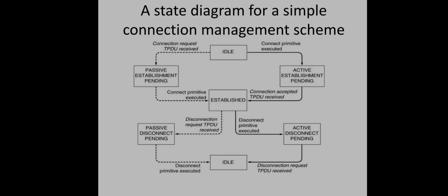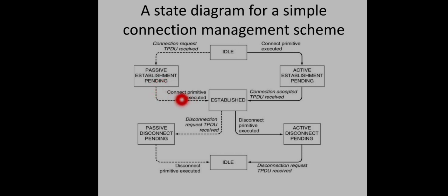On the server side, upon receiving the connection request TPDU from the client, the state changes to passive establishment pending — because the request was initiated by the client. After some time the server responds with an acknowledgement, executing the connect primitive and sending the acknowledgement back to the client. The state then becomes established. Once established, data transfer can be done, and after finishing all data transfer, the connection can be terminated.